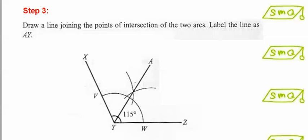Next, we draw a line joining the points of intersection of the two arcs to Y. Label the line as AY. AY would be our angle bisector.